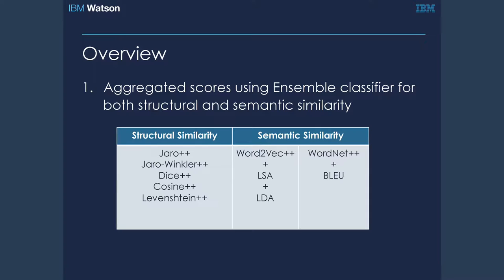So step one was aggregating scores using an ensemble classifier for both structural as well as semantic similarity. Let's for some time focus on the structural similarity bit. You'd see that there are five algorithmic paradigms there. That's Jaro, Jaro-Winkler, Dice, Cosine, and Levenshtein. Now each of these algorithms conventionally, they get used to compute edit distances between words at a character level.